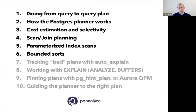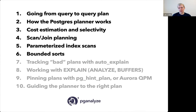We'll start by talking about how we go from a query to a query plan in Postgres and how the Postgres planner works. We'll then talk about how the planner uses cost estimation and selectivity to come up with its plans and what components influence that. Then we'll talk about scan and join planning, which is one of the core planner functionalities, and two special cases: parameterized index scans and bounded sorts — both of which often show up in plans I've personally worked with and will help you speed up your queries.